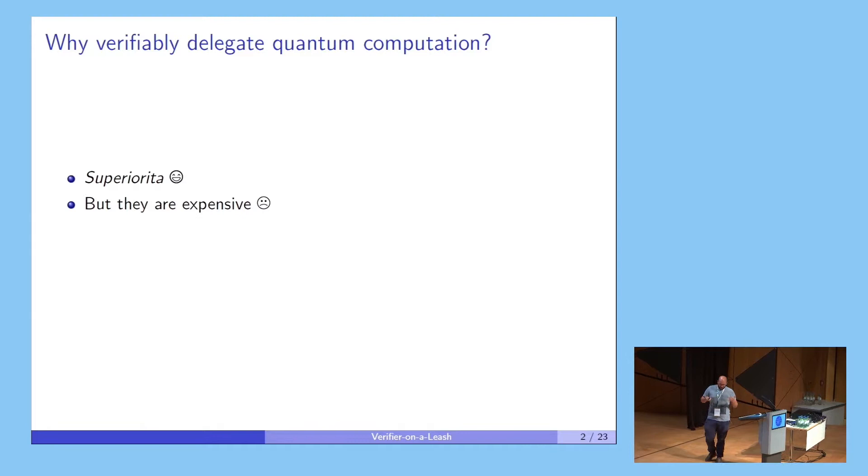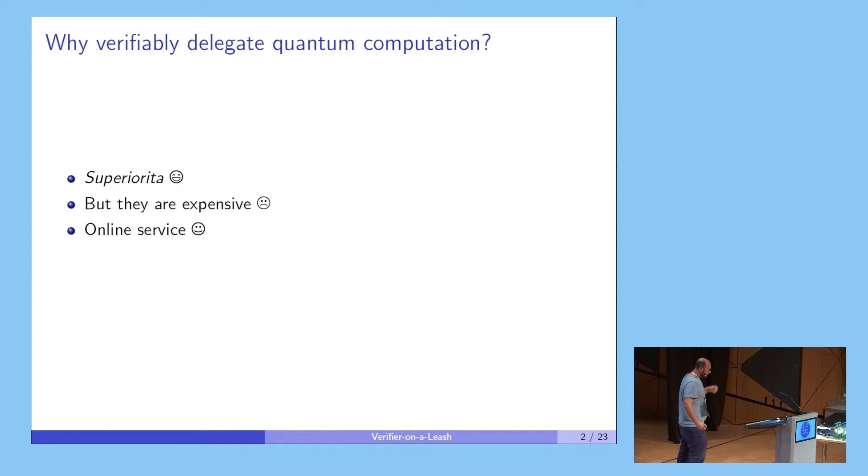and not every university or research institute would be able to buy them. So this computational power would be limited to very rich institutes, but not everyone could afford it. But as IBM does today, we could outsource our quantum computation to the cloud. We can send our quantum circuit, it would be run in this quantum server, and we would have our answer back. But the question is,